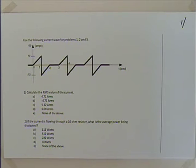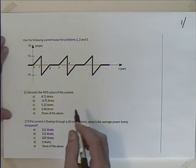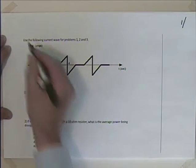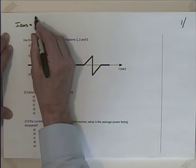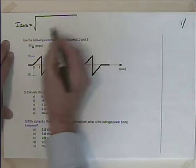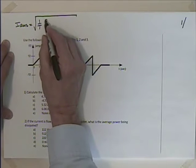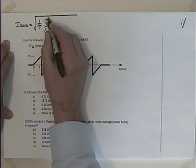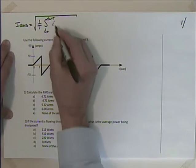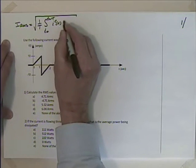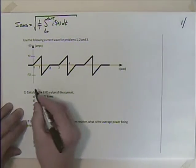Okay, bearing with my coughing as we're wrapping up a cold. Let's get started. The first problem wants us to find the RMS value. The equation for RMS current is I_RMS = sqrt( (1/T) * integral from T_naught to T_naught+T of i²(t) dt ).